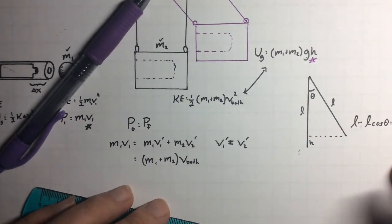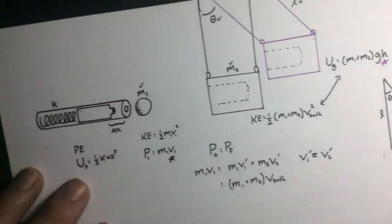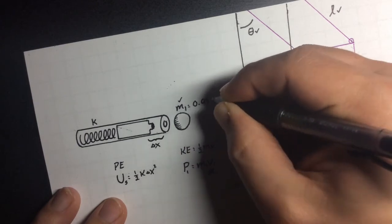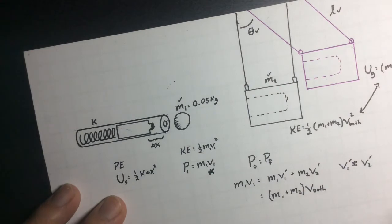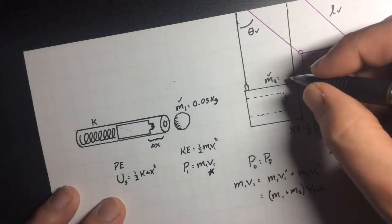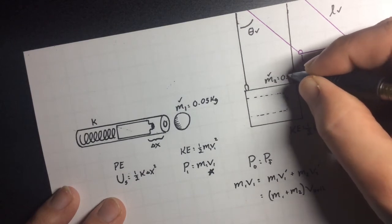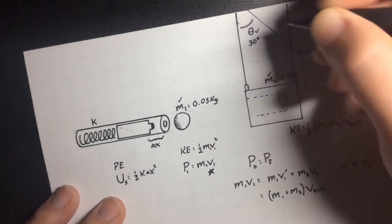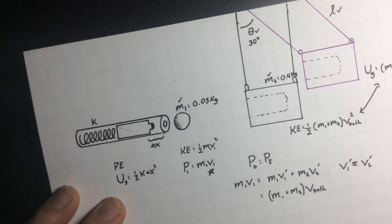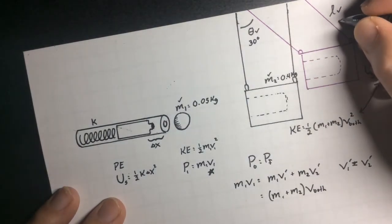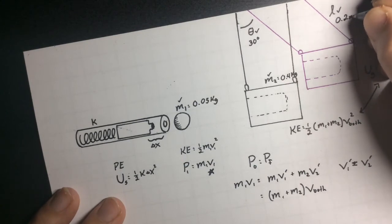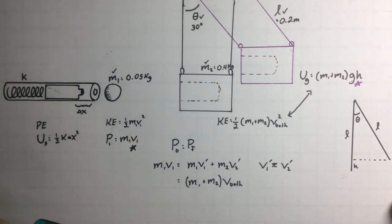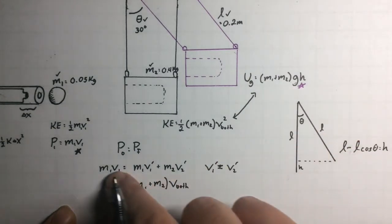And so this will be the second part of the video where you would actually plug stuff in. So let's say that this mass m1 was 0.05 kilograms. So what is that, like 50 grams. m2, let's just make it like 0.4 kilograms. Angle theta, let's make that about 30 degrees, just because. And I think that's all, we need the length over here. Let's make this length about 0.2 meters.